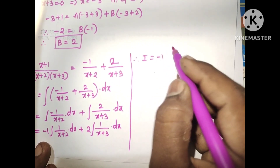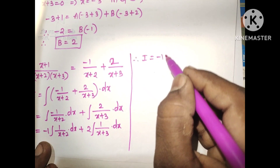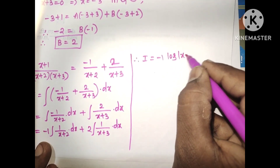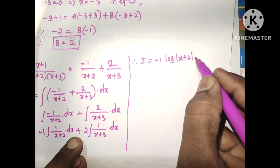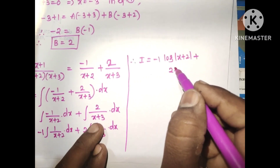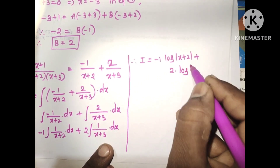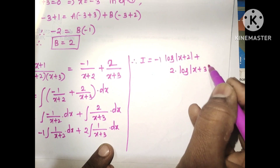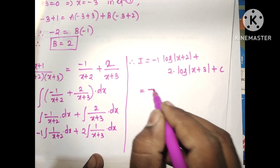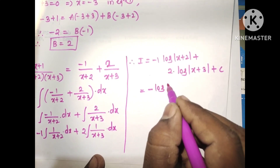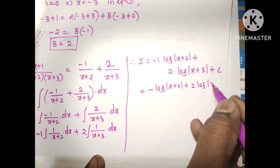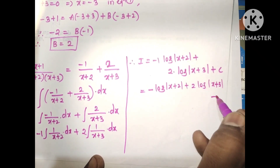Using the standard formula, integral of 1 divided by x plus a equals log mod x plus a, we get: I equals minus 1 times log mod x plus 2, plus 2 times log mod x plus 3, plus C. So the final answer is minus log of x plus 2 plus 2 log of x plus 3 plus C.